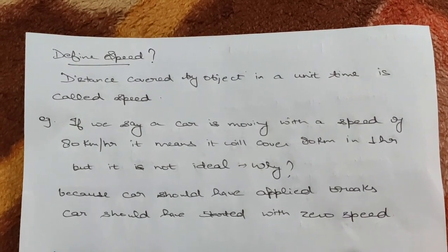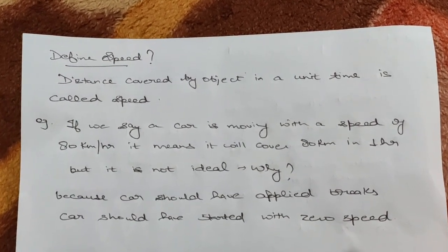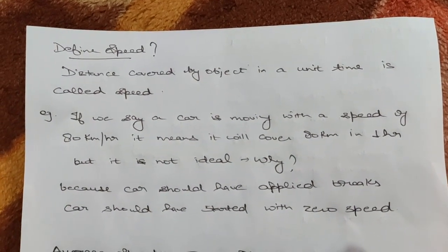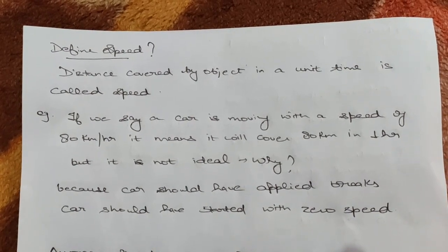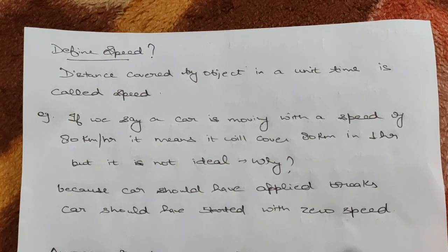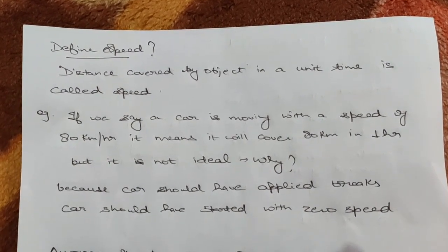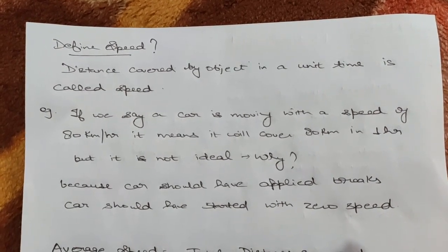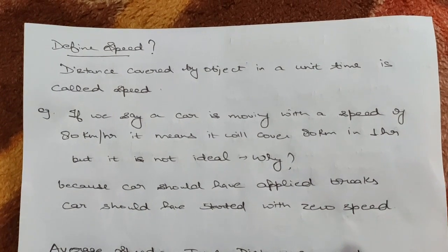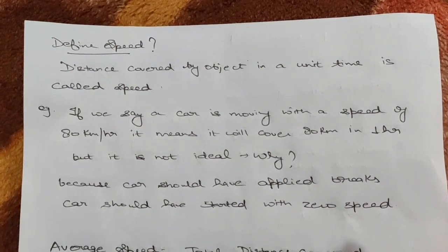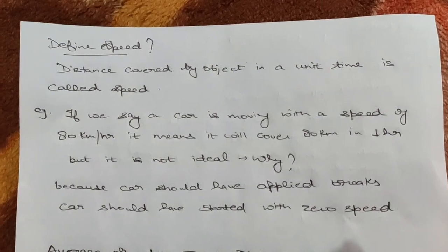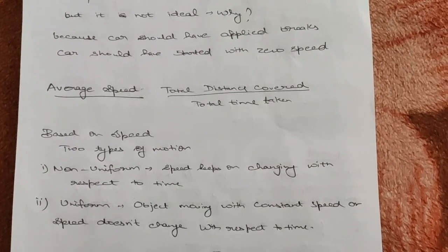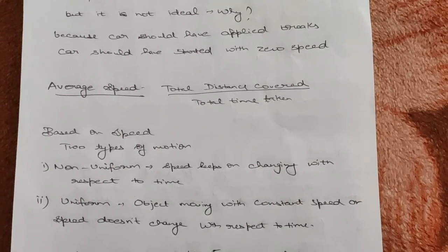But is it ideal to say the car moves with the same speed throughout one hour? No, it is not ideal, because the car will have applied brakes or started from zero speed. So we cannot say the speed is 80 km/h throughout the entire journey — the speed may have decreased or increased at different points.